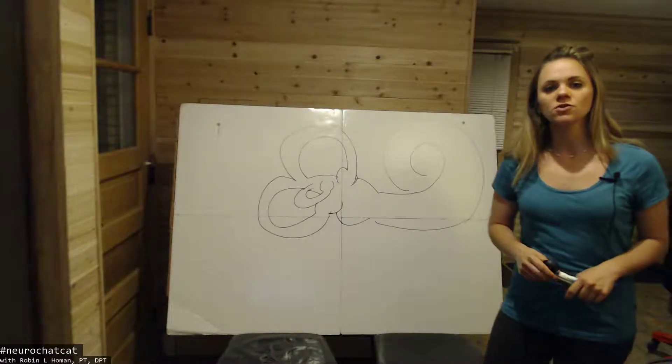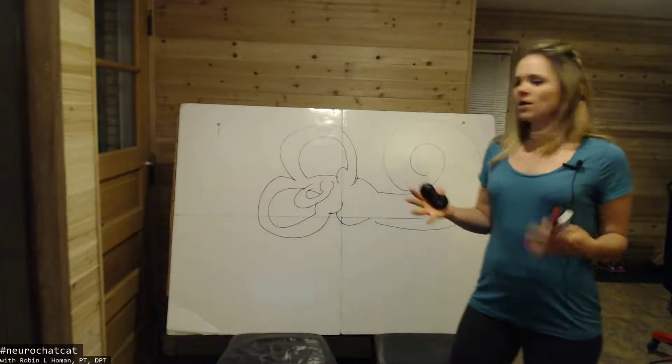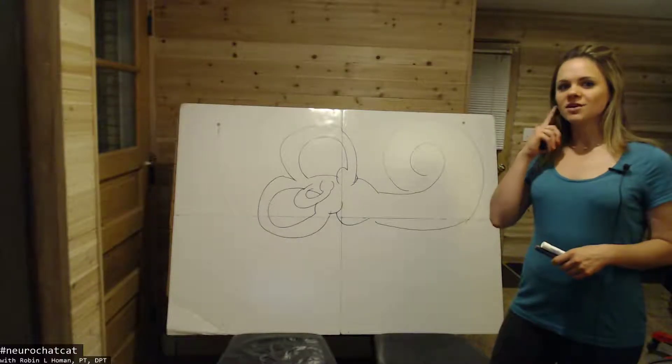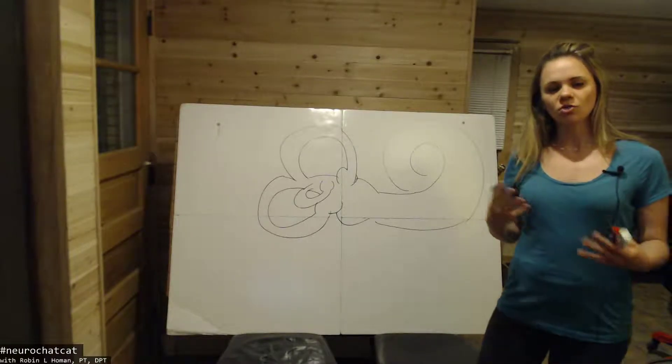Hi everyone, it's Robin Holman from NeuroChat Cat and today I'd like to talk about how our body determines where it is in space, at least from the inner ear. The other two ways it does is through our eyes and through our muscles. But today is all about the inner ear.